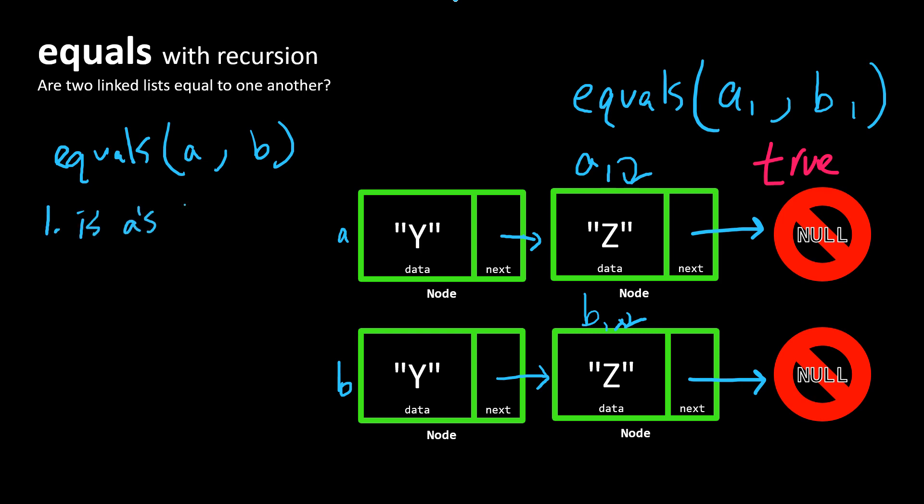is A's data equal to B's? That's a hard condition of these two lists being equal to one another.